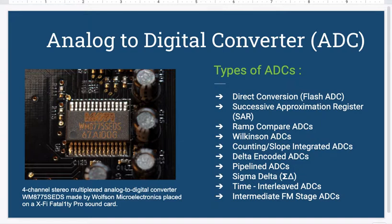Now we have the different types of ADCs. A large number of ADCs are available these days, direct conversion, flash ADCs, they are the fastest ones. Then we have the successive approximation register, SAR, RAM compare ADCs, Wilkinson ADCs, counting and slope indicated ADCs, one of these includes the single slope ADCs, that we are going to discuss in detail in the later section of this presentation.